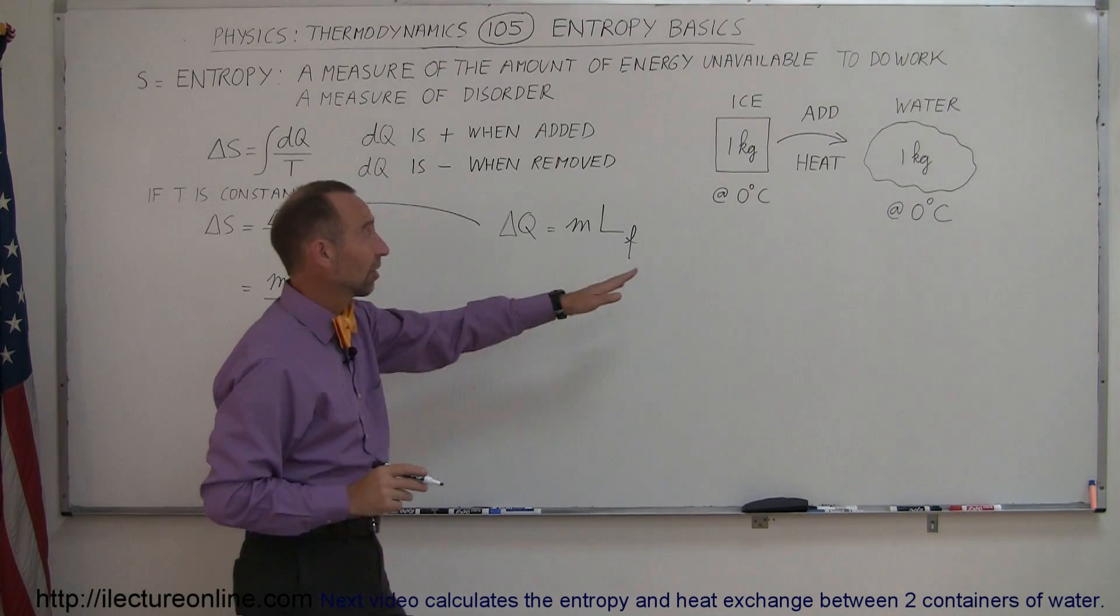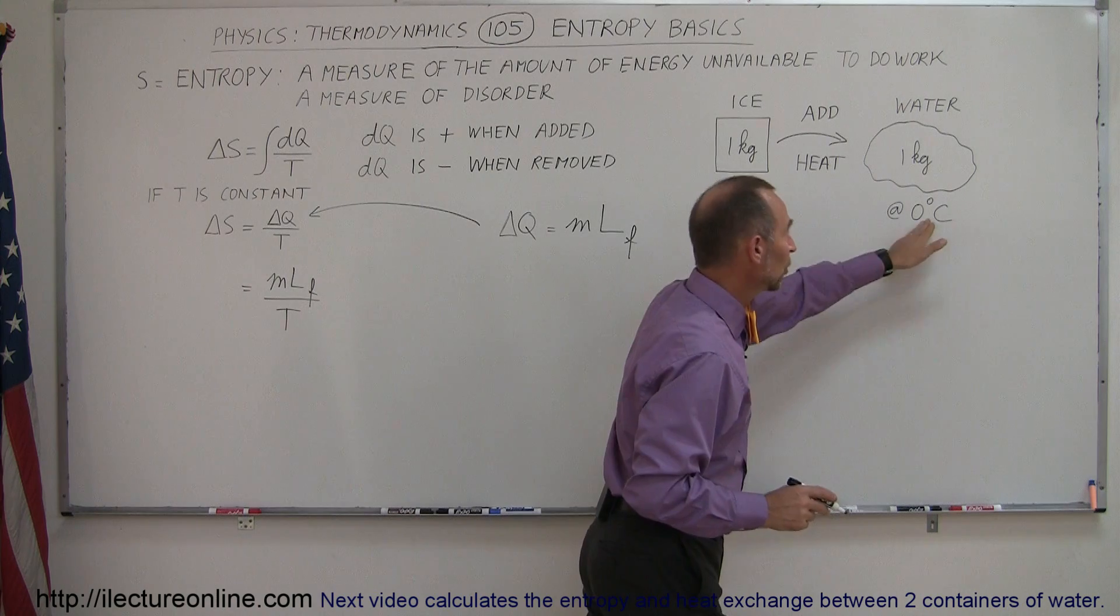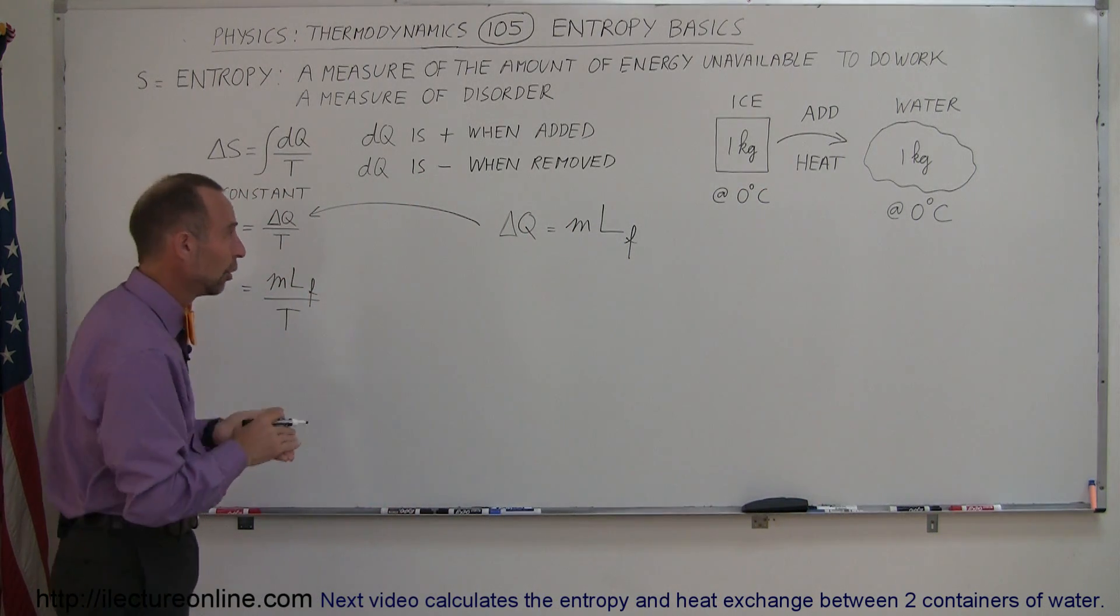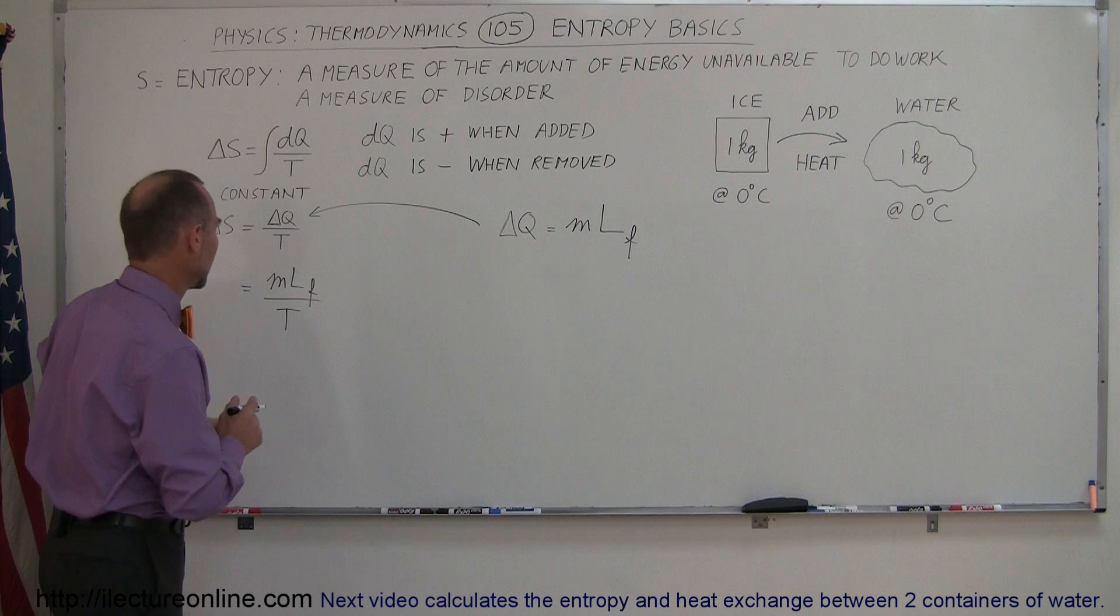Now of course the ice is at zero degrees centigrade. It doesn't change temperature when it turns into water so the temperature there would be zero degrees centigrade converted to kelvin which would be 273 kelvin.